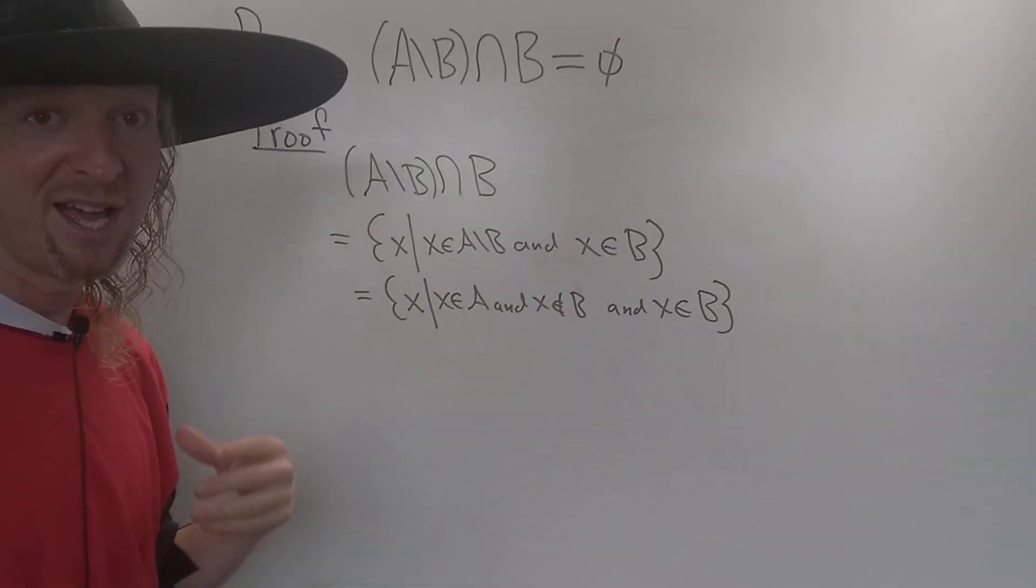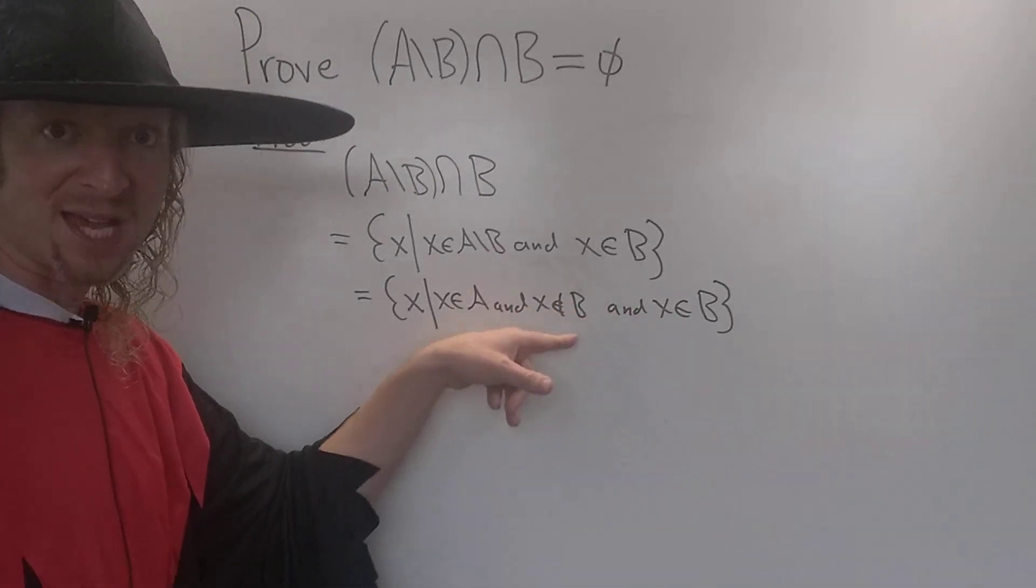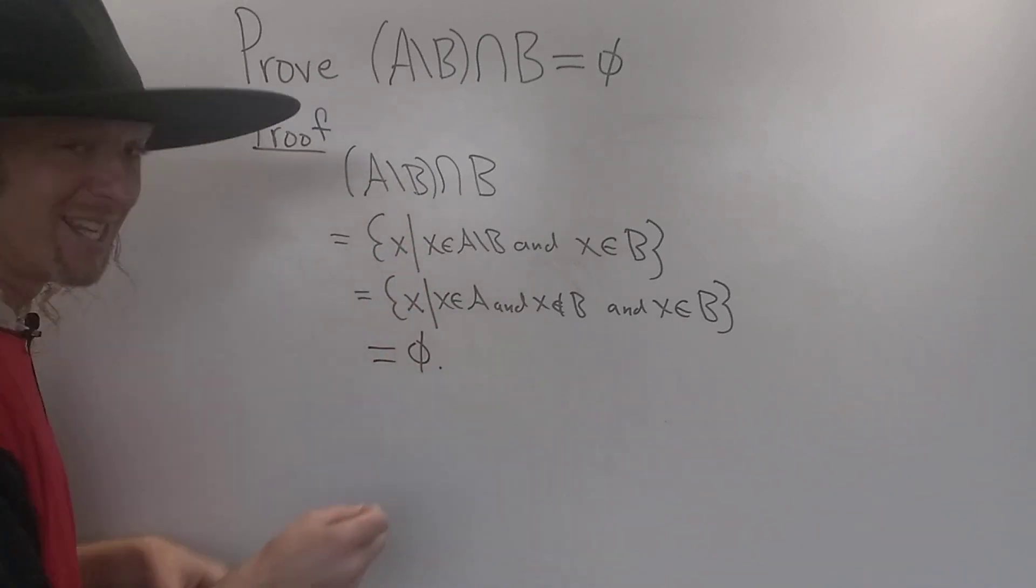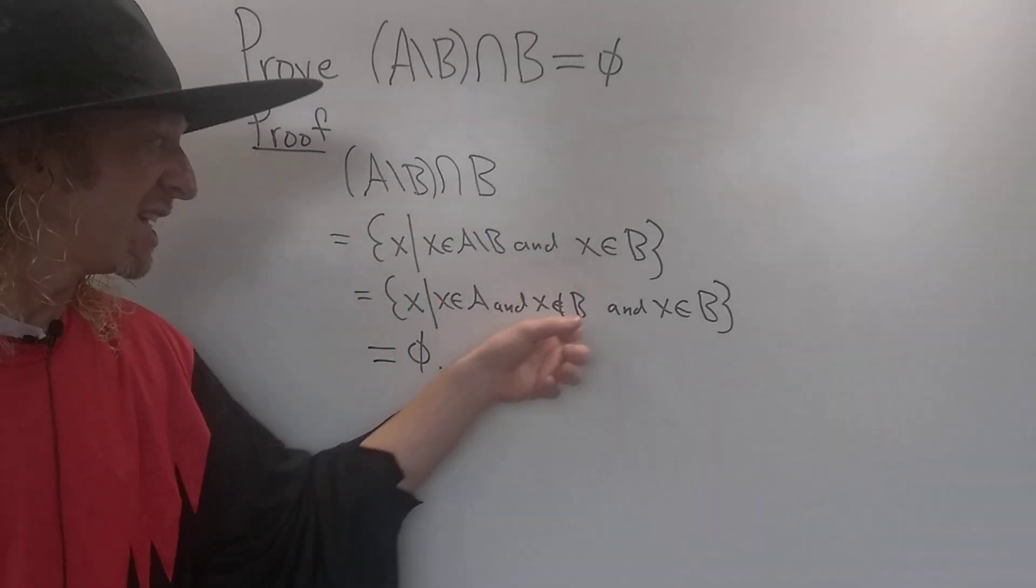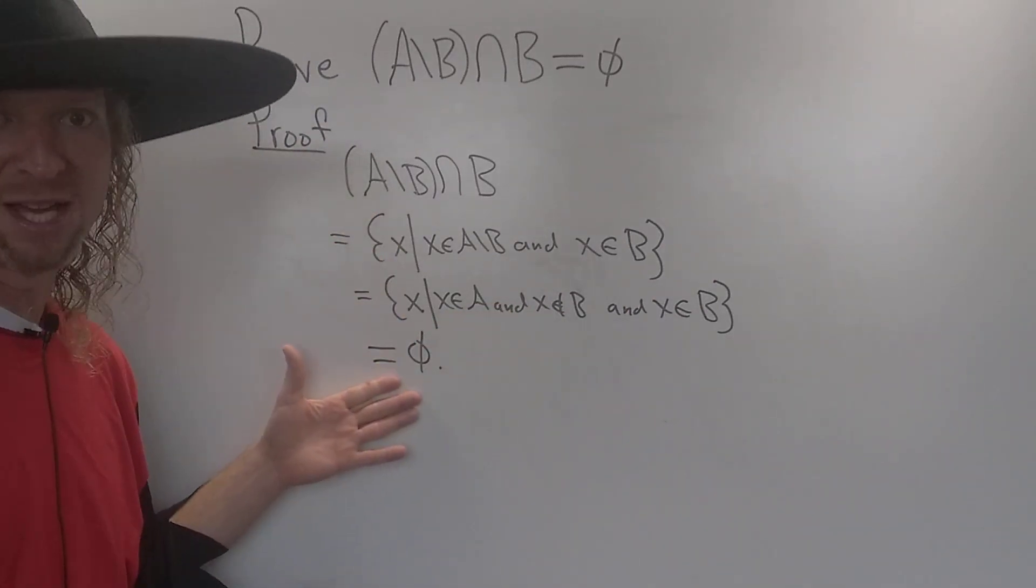And now you see the statement is completely ridiculous, because we're saying X is in B and it's not in B. So where is it? It's in the empty set. This doesn't make any sense. You can't have an element that's in a set and not in the set. So this set must be empty. It must contain no elements.